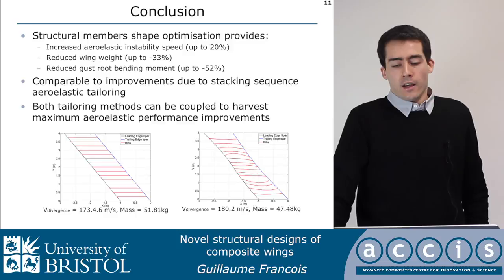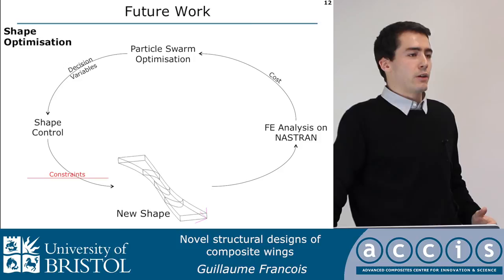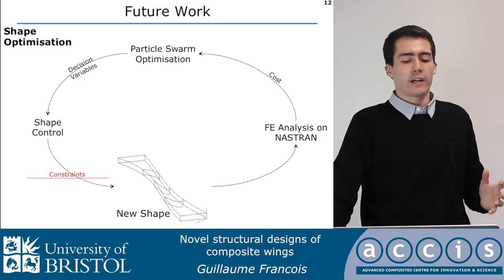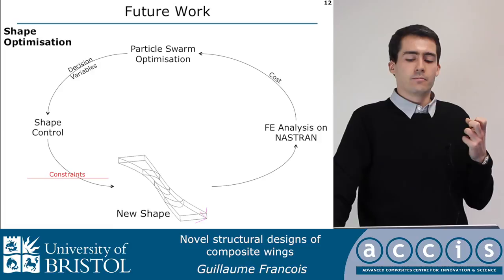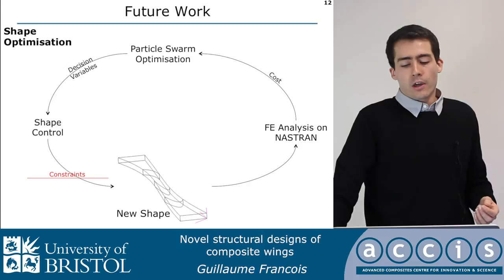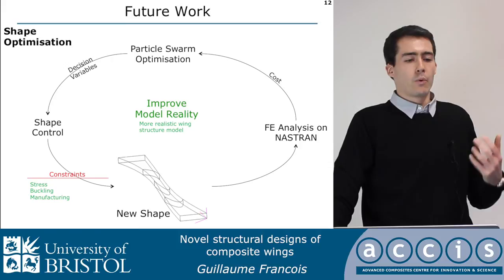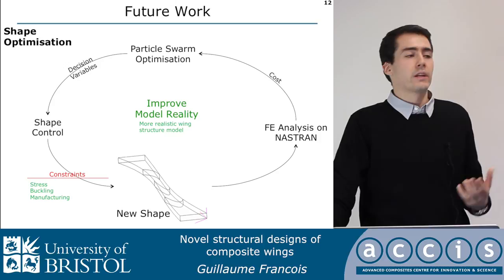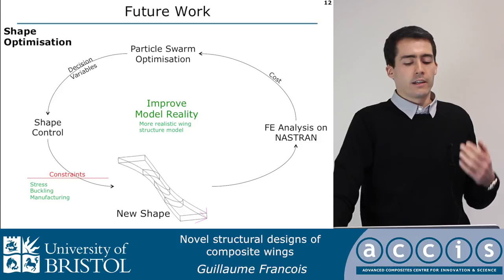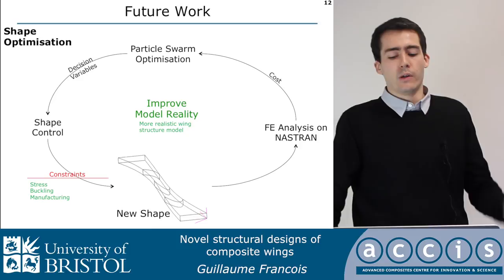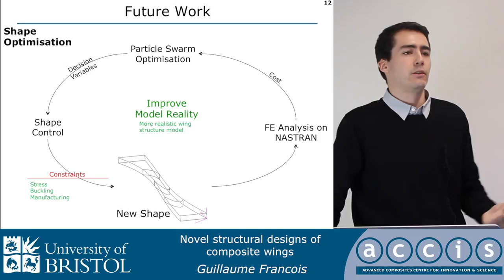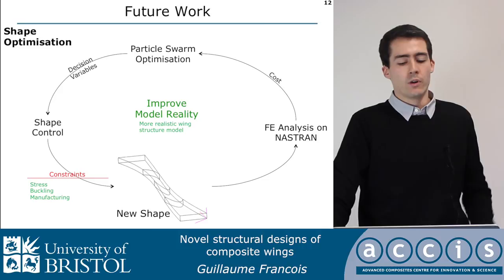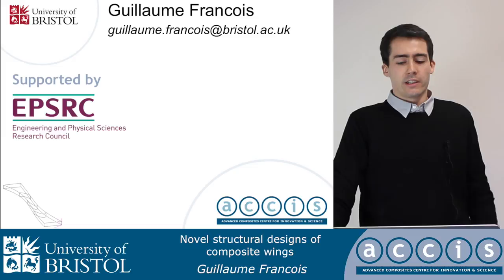In terms of future work, there is still a lot of research to go through, as this represents only nine months of work. One key area where this research could benefit from industrial input is model reality. The wing model currently used is relatively simple, and I'd like to increase its complexity toward what wing designers use on a daily basis, adding constraints such as stress, buckling, and manufacturing. My question to industry is: at what point in terms of model reality do you consider this idea feasible for implementation in wing design?